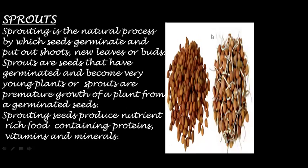Let's talk about sprouts. Sprouting is the natural process by which seeds germinate and put out shoots, new leaves or buds. Sprouts are seeds that have germinated and become very young plants, or you can say that sprouts are the premature growth of a plant from germinated seeds. Sprouting seeds produce nutrient-rich food containing proteins, vitamins and minerals.